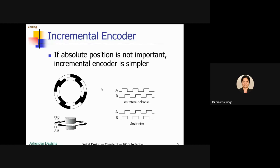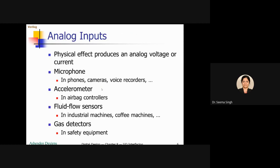Other analog inputs include the microphone, accelerometer, fluid flow sensor, and gas detector. We will go through the working of each. The microphone is the most common sensor in everyday life — it records our voice.